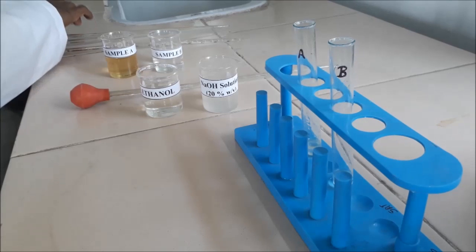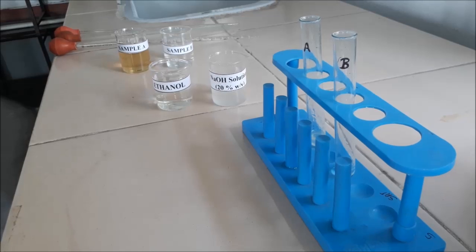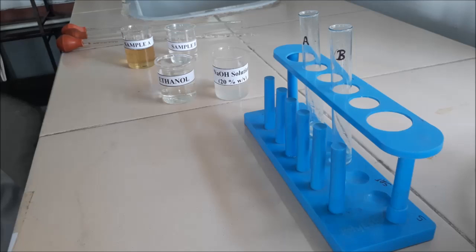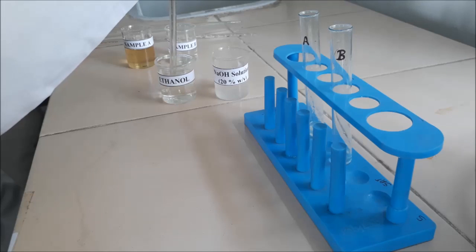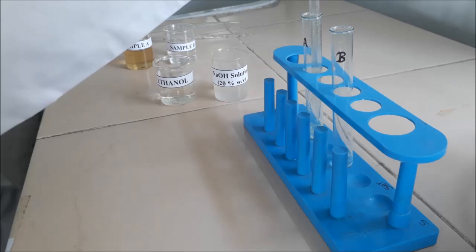Next, take another fresh pipette and measure 0.5 ml of ethanol and then transfer it into test tube A. Ethanol is used to dissolve the lipid present in the sample.